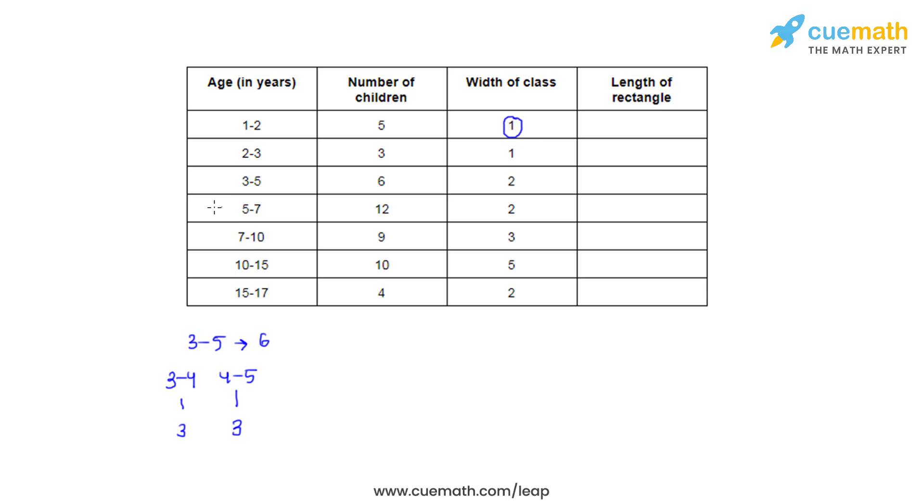Now similarly, if we go to the class interval 5 to 7, we can again make two subclass intervals and the frequency of each subclass interval will be 6, because the frequency associated with the main class interval is 12, which must get equally divided to 2 subclass intervals.